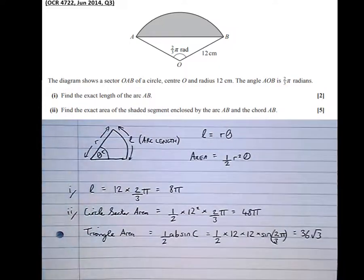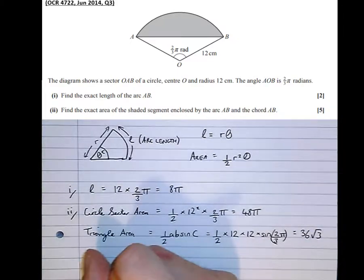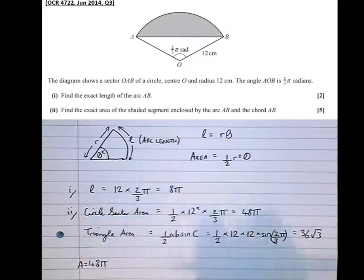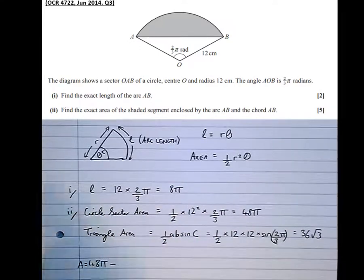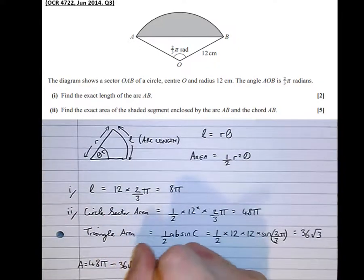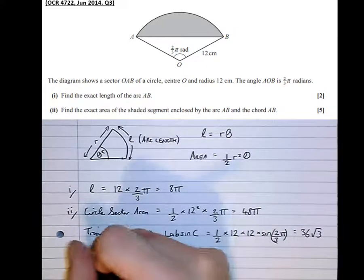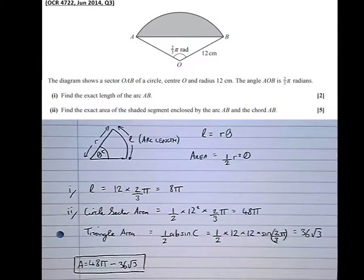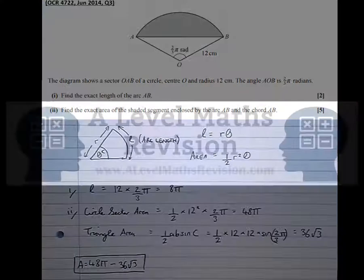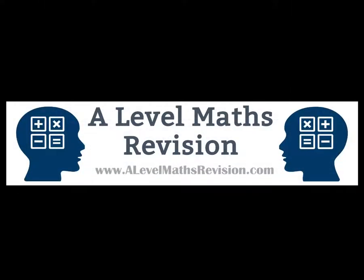And we can see from the diagram that the total area of the shaded region is the area of the circle sector, 48 pi, minus the area of the triangle, which is 36 root 3. Now it asks for the answer in exact form, so that's a perfect form to leave it in. For more resources like this and some categorised exam questions, go to...